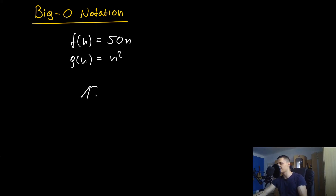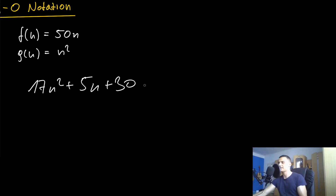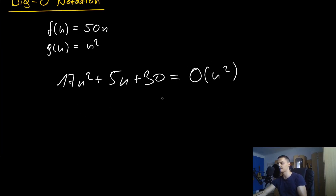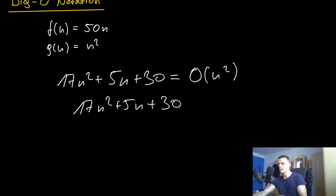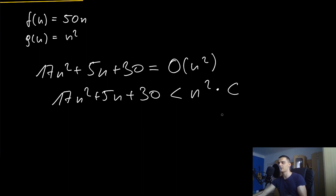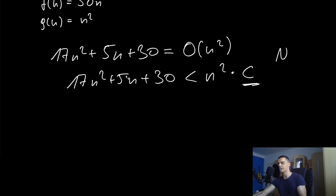I can also do this for something like 17n² + 5n + 30. This is also in Big O of n², even though n² alone is less than 17n². This is still true because if I say 17n² + 5n + 30 is always going to be less than n² times some constant for infinitely many n's, I can definitely find a c and a starting index N for which this inequality is true. So the left function is in Big O of n².